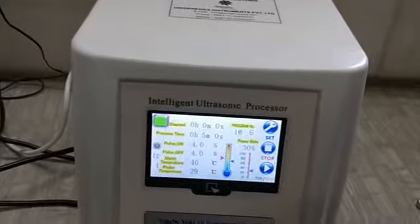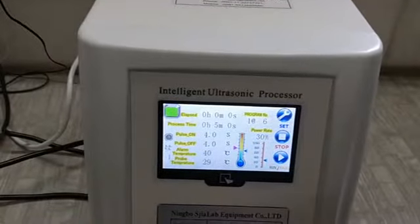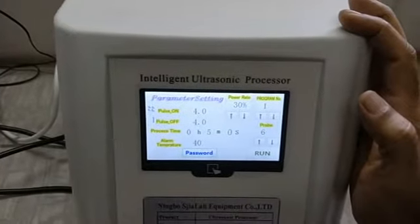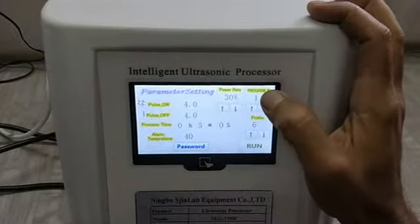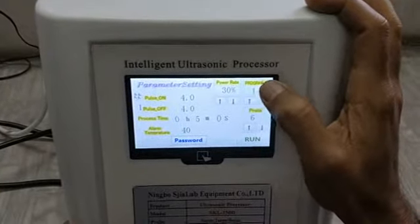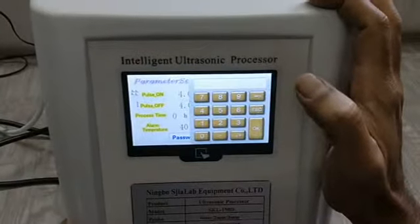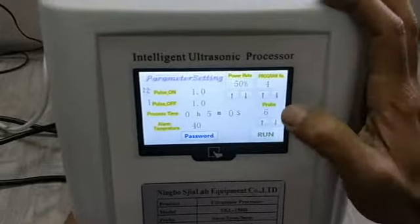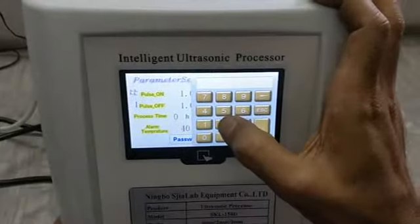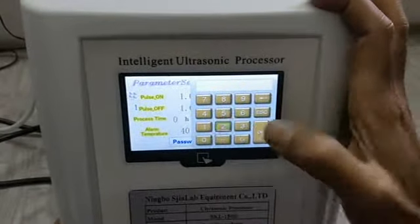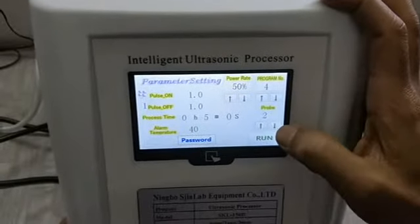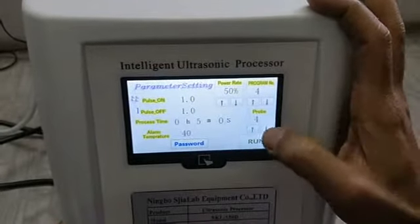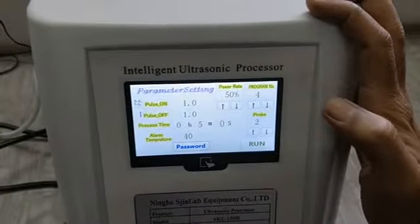Suppose I want to set my program number 1. I will go to set. Then I will firstly select my program number. Suppose I want to save this as number 4. I will save 4, okay. Then I will select my probe. My probe is 2, okay. Or I can select my probe by increasing or decreasing: 3, 4, 3, 2.